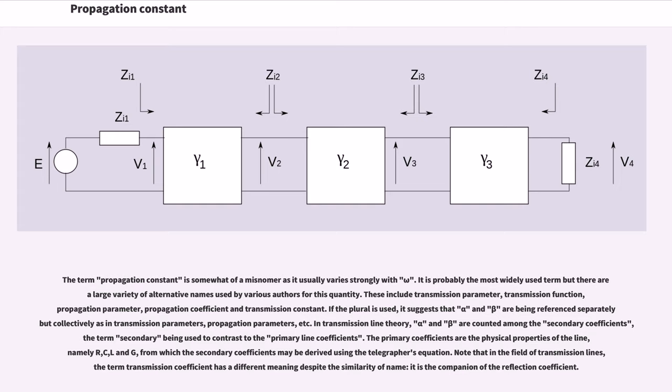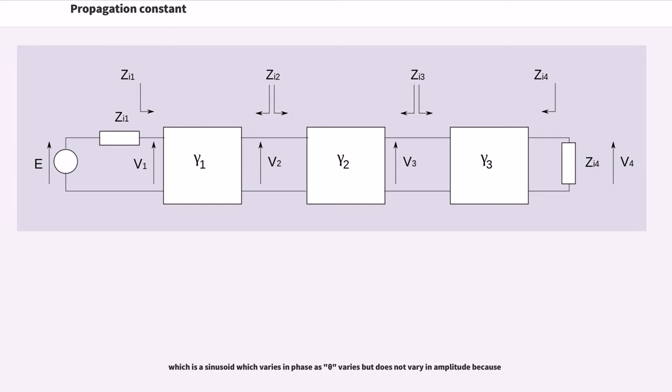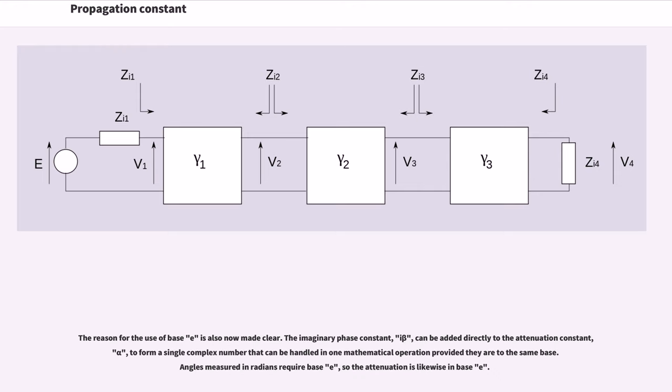The propagation constant, symbol gamma, for a given system is defined by the ratio of the complex amplitude at the source of the wave to the complex amplitude at some distance x. Since the propagation constant is a complex quantity we can write gamma = alpha + i*beta. That beta does indeed represent phase can be seen from Euler's formula, which is a sinusoid which varies in phase as beta varies but does not vary in amplitude.